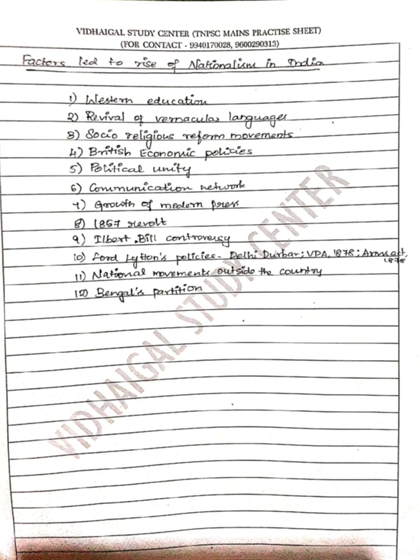The sixth point is communication networks. The British developed postal services, telegraph lines, railways, and roadways. This was an important factor for the rise of nationalism in India, as it connected people across the country.